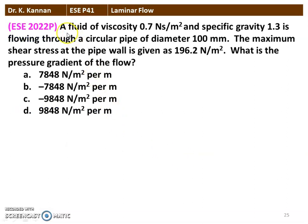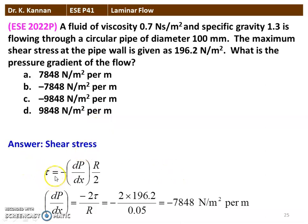The next question from the 2019 question paper: A fluid of viscosity 0.7 N·s/m² and specific gravity 1.3 is flowing through a circular pipe of diameter 100 mm. The maximum shear stress at the pipe wall is 196.2 N/m². What is the pressure gradient? We calculate: τ = −(dp/dx)(R/2), so dp/dx = −2τ/R = −2 × 196.2 ÷ 0.05 = −7848 N/m² per meter length. The answer is option B: −7848 N/m² per meter length.